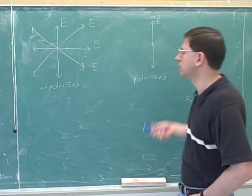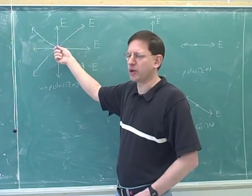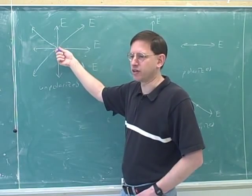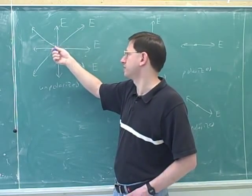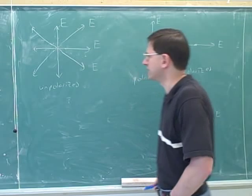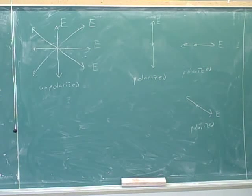These are examples of how you draw polarized light when oscillating in only one direction. Normally we have unpolarized light — normal light has oscillations in all directions perpendicular to the propagation of the wave. So that's the difference between polarized and unpolarized light.